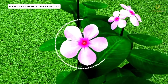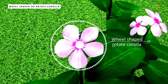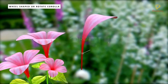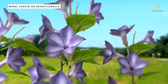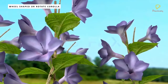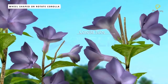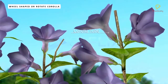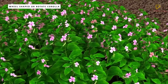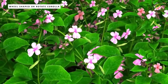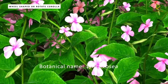Wheel-shaped corolla is also called rotate corolla. In a petal, the lower narrow stalk-like portion is called the claw and the upper extended portion is called the limb. In wheel-shaped corolla, the corolla tube is comparatively short and its limb is at right angles to the corolla tube, making it appear more or less like a wheel. Wheel-shaped corolla is seen in the flowers of Vinca rosea. Vinca rosea is the botanical name of Vinca.